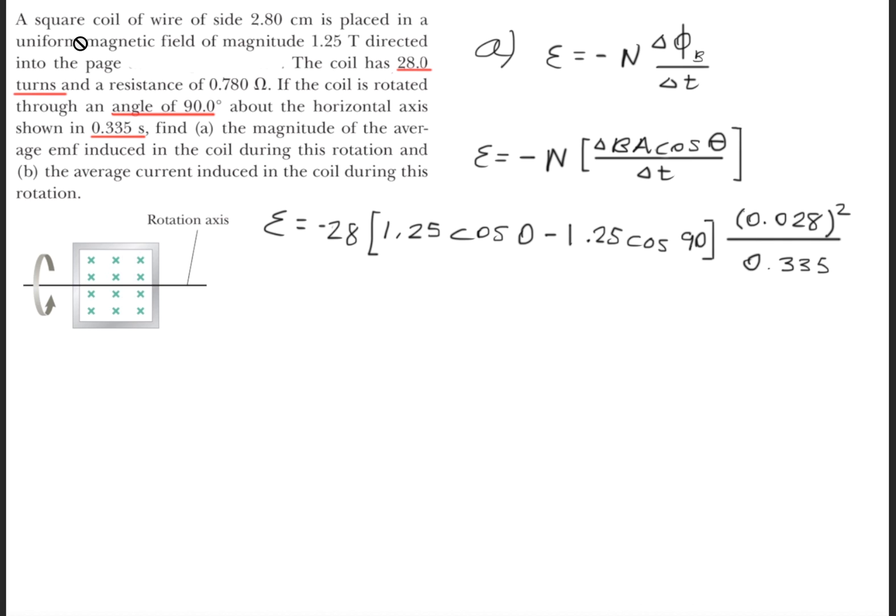Now the area of a square coil is simply length times width, or since it's a square, we could just say L squared or X squared. But it was given here that we have 2.80 centimeters. So we have to convert that to standard units of meters, which is why we'll move the decimal over so that we get 0.028 meters and we'll square that value.